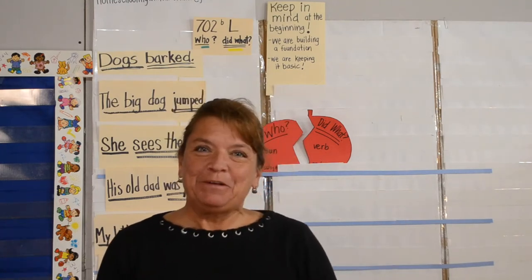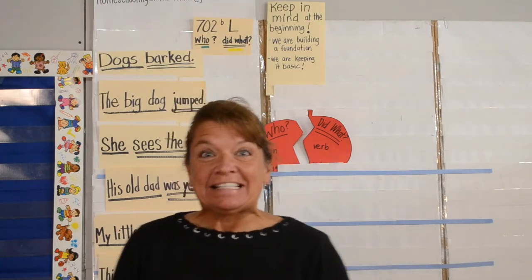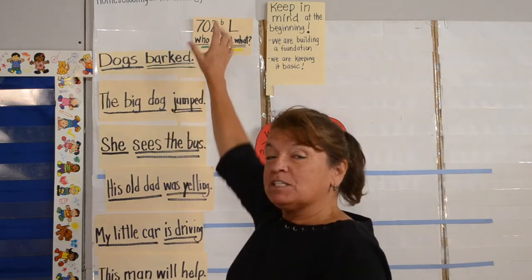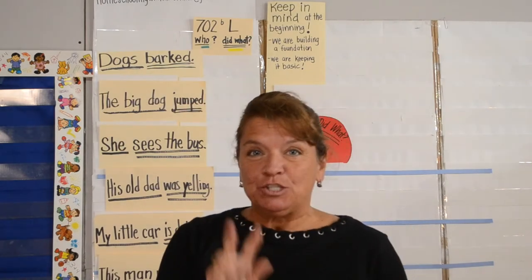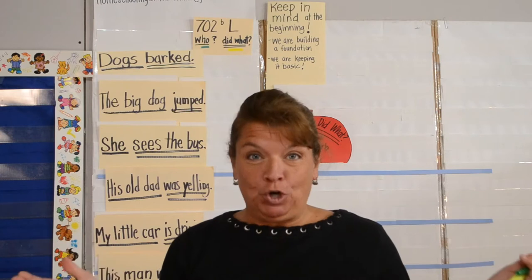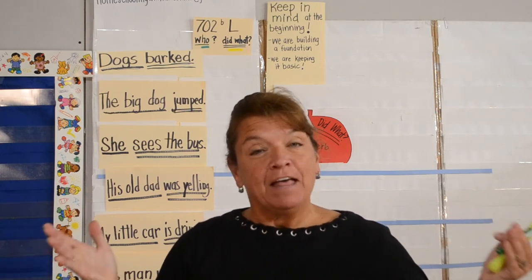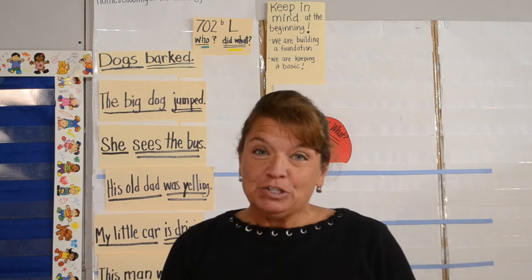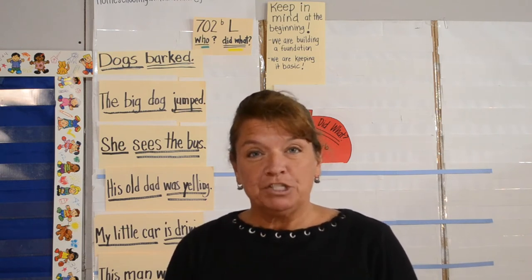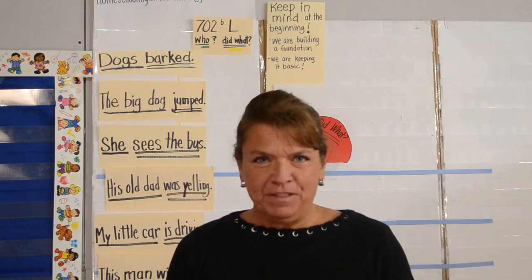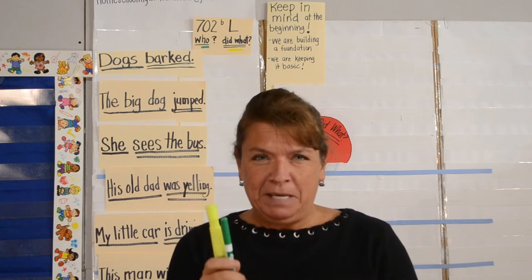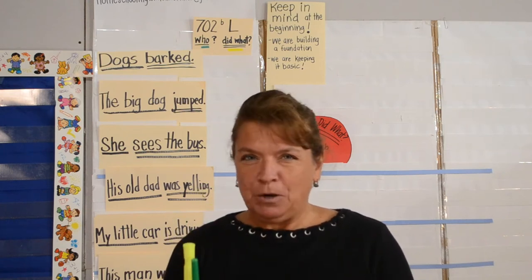Welcome back to Homeschooling with Mrs. Miller. Today's lesson is 702B. This is part two of your who and did what — understanding that a sentence has two main parts, what adults call the subject and the predicate. For first and second graders, to find the subject and predicate we ask two simple questions: who and did what. It simplifies things, and the fact that we color code parts of speech makes it so much easier for these kiddos to learn.